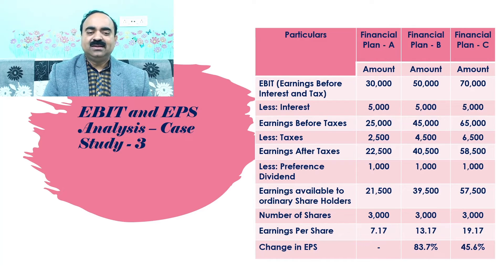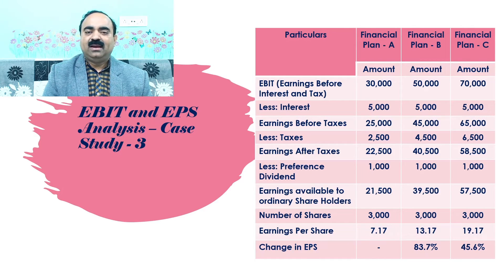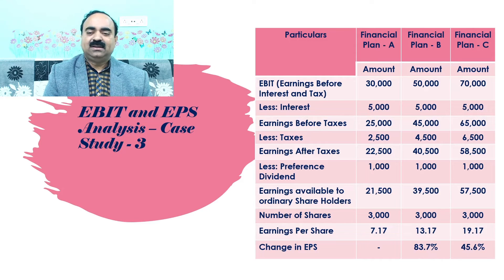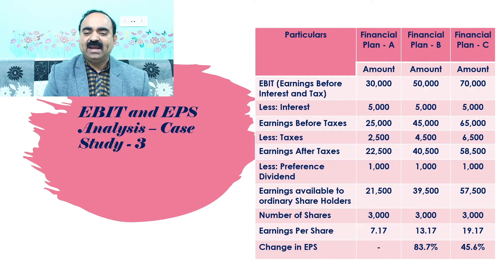Dear students, for finding the solution for Case Study 3, I had used a four-column table. In the first column I had taken particulars; in the second column, financial plan A; in the third column, financial plan B; and in the fourth column, financial plan C. EBIT was given as ₹30,000 for financial plan A, ₹50,000 for financial plan B, and ₹70,000 for financial plan C. Interest is calculated as ₹5,000 for all financial plans. After deducting interest from EBITs, we got earnings before taxes of ₹25,000 for plan A, ₹45,000 for plan B, and ₹65,000 for plan C.